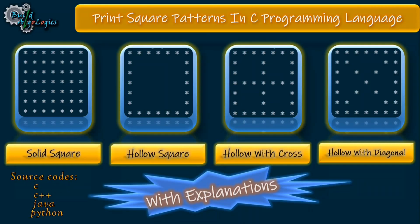Those four languages are C, C++, Java, and Python. For writing and executing our programs I use VS Code or Visual Studio Code. You may use any IDE of your choice, but if you want to set up VS Code for running C and C++ programs you can watch the video shown in the i-card button above. You will also find the same link in the description of this video.